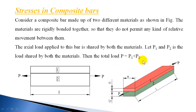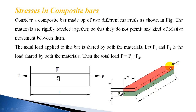The total load is shared by both materials: P = P1 + P2. The second condition is that the deformation in both materials are equal, that is delta L1 = delta L2. In the three-dimensional view of the composite part, there are two materials one and two. The load is acting and they are rigidly joined, so both will elongate by the same amount.